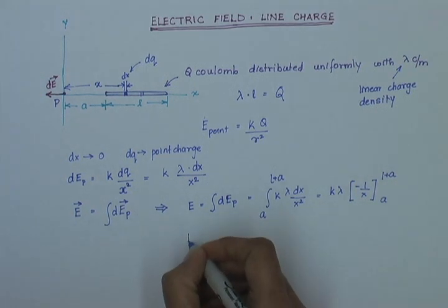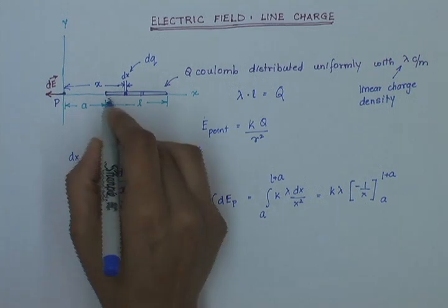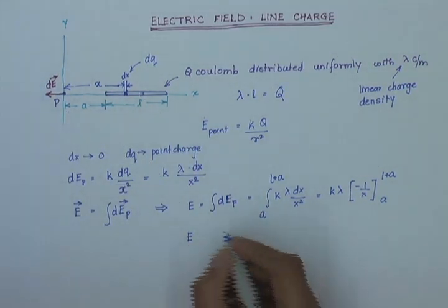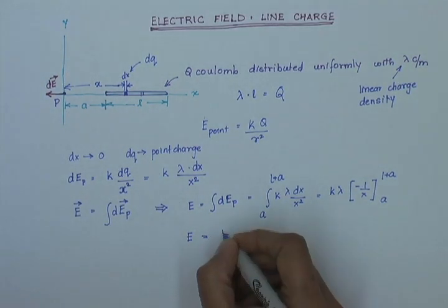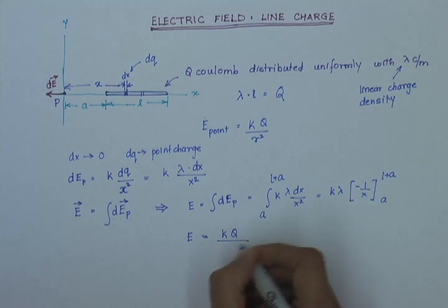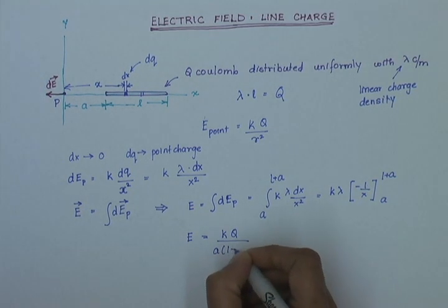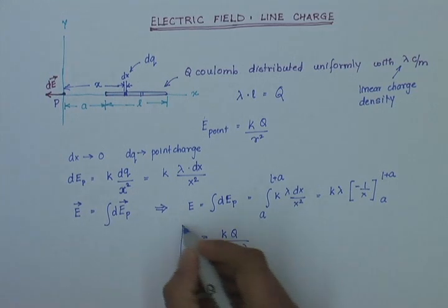And so, I can get my electric field due to a line of charge at a distance A from it is equal to kQ over A into L plus A. This is my answer.